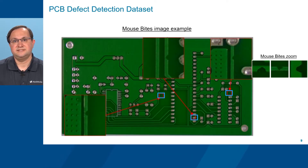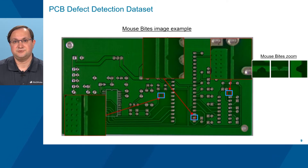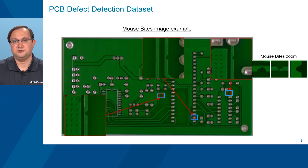The dataset's second defect class is mousebites, which, while humorously named, present a serious problem to PCBs by reducing the surface for electrical signals to travel through on copper line traces. You can see several zoomed-in mousebite ROIs in the example image shown here.